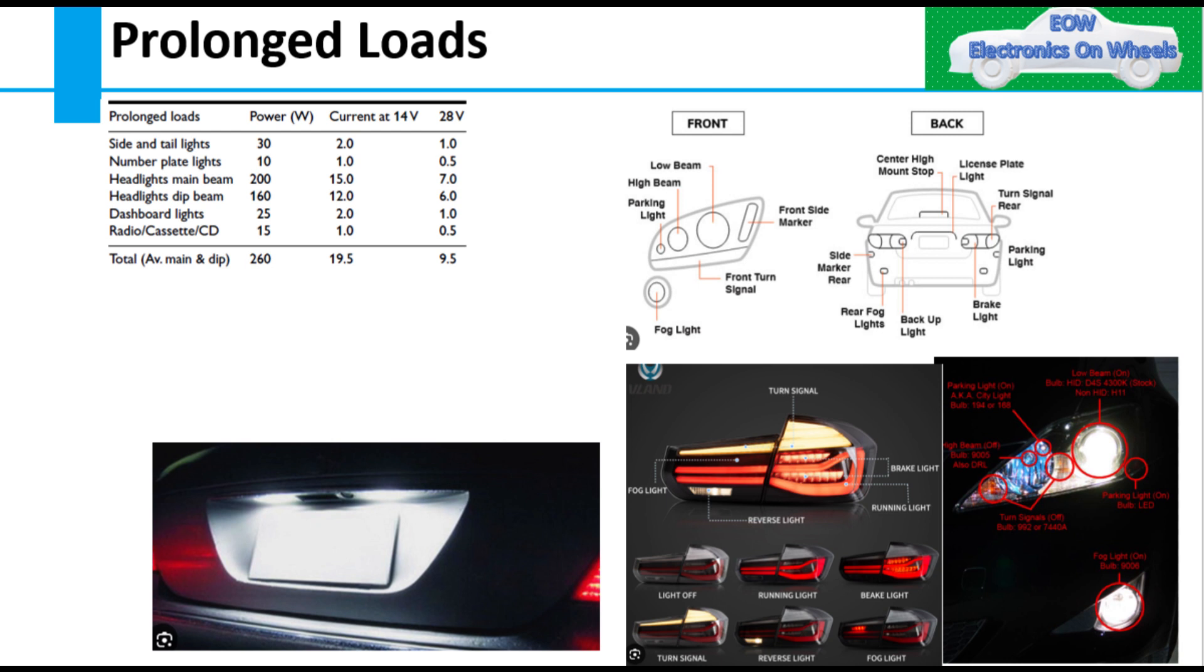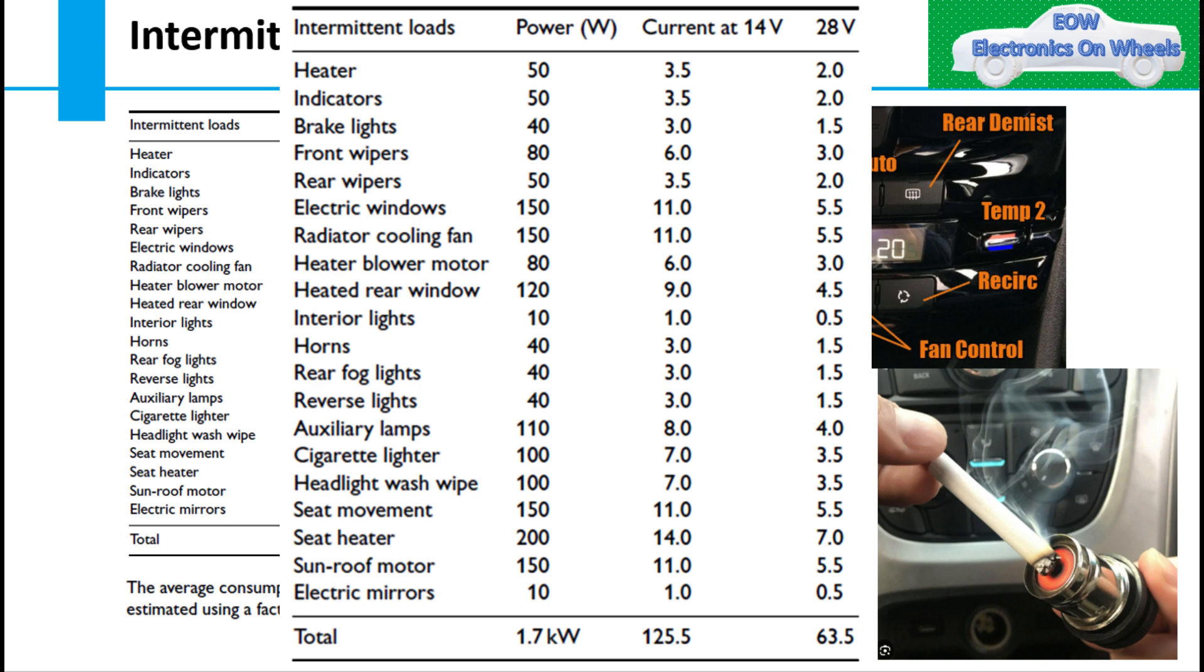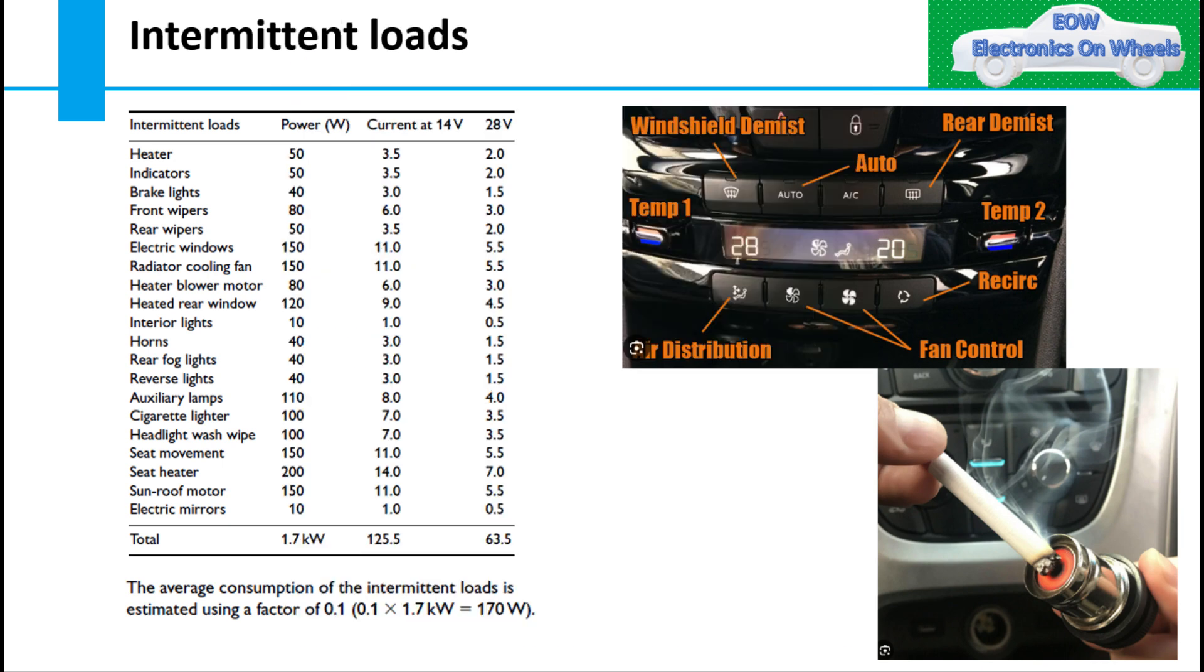Intermittent loads are those loads which are used for very less duration and infrequently, for example horn or indicators heater. You can see here I have mentioned some of the examples of intermittent loads. Average consumption of intermittent loads using factor is 170 W. All these calculations will play a very important role in load calculation to decide the alternator rating. So please check all the total values for all three different loads.